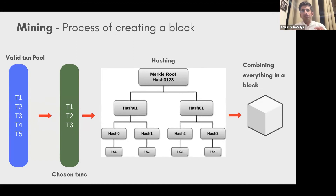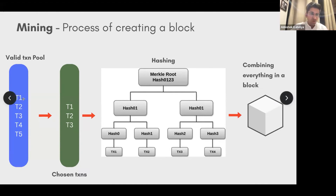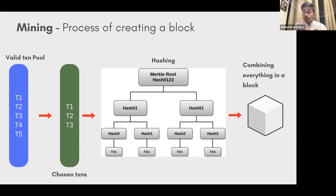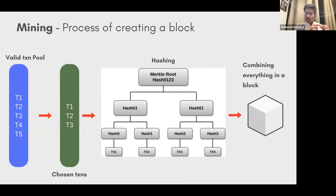Let me explain how mining works step by step. Transactions first arrive unvalidated into a pool — T1, T2, T3, T4, T5. You take a transaction and do the three checks: sender balance, valid receiver, sender authority. Once validated, transactions move to a 'chosen transactions' queue — a ready queue of confirmed transactions. Then while creating a block, you pick up transactions from this ready queue.